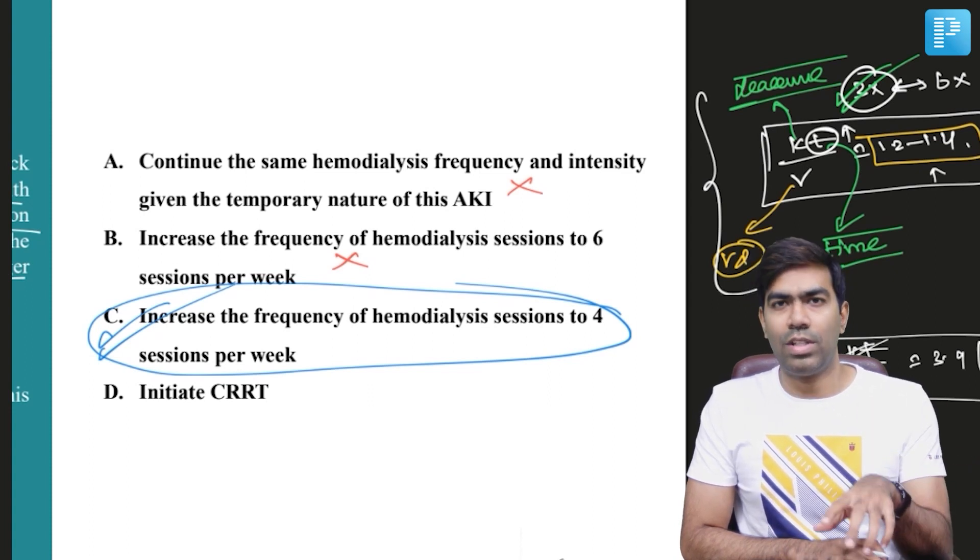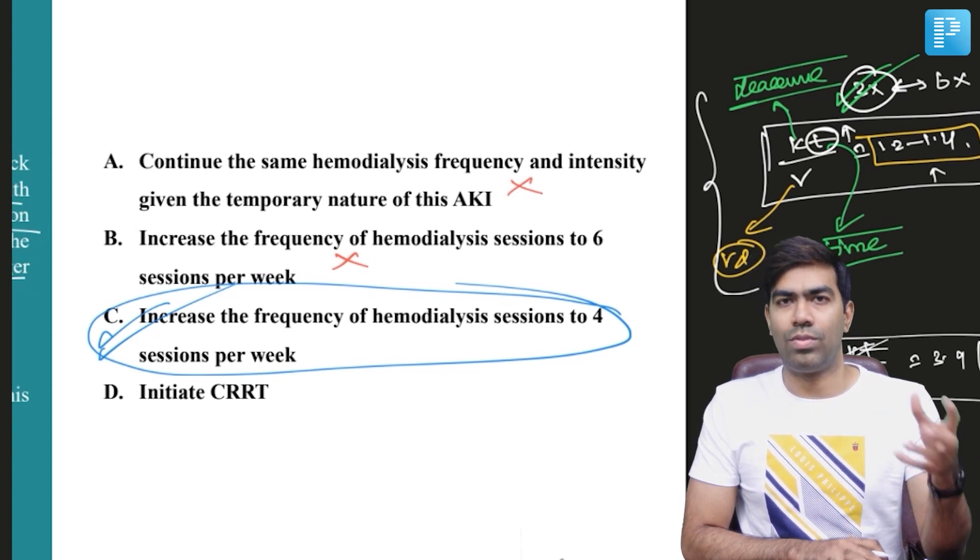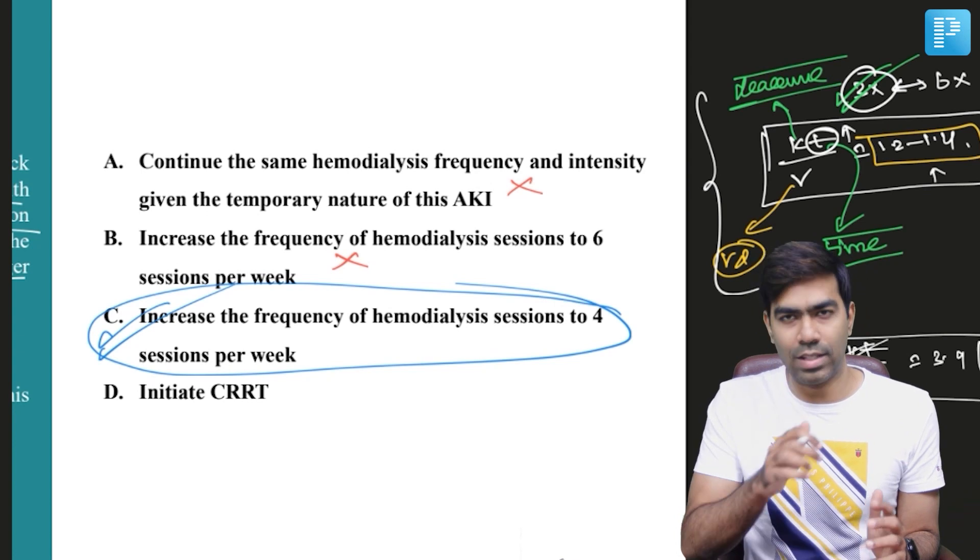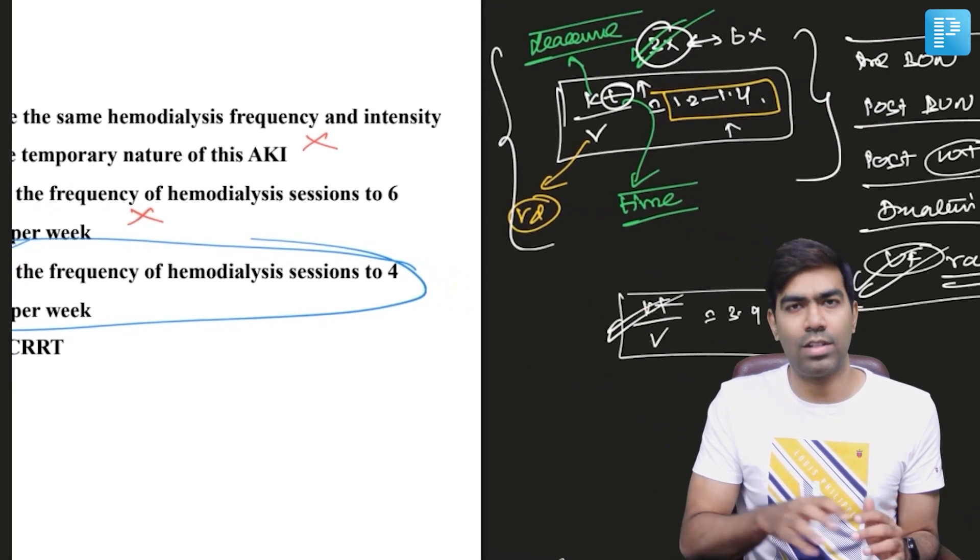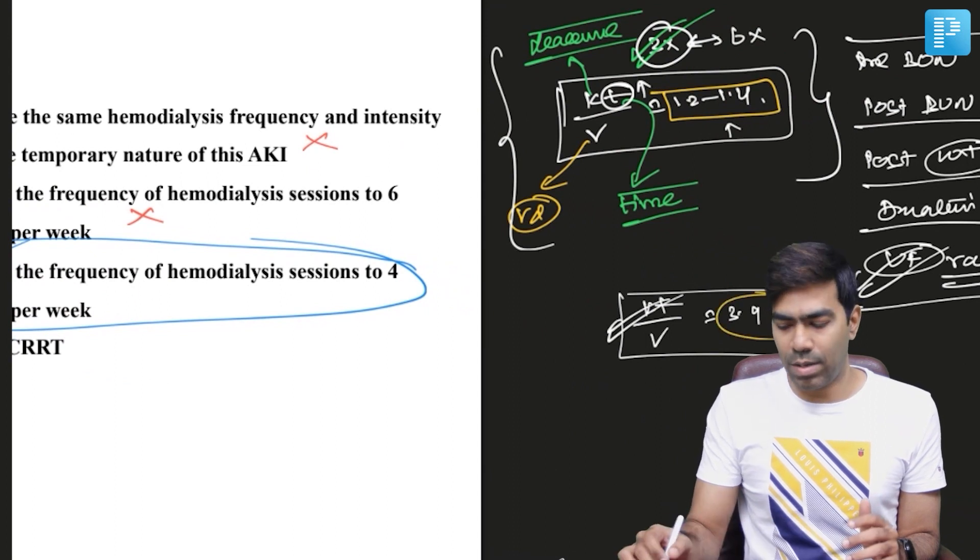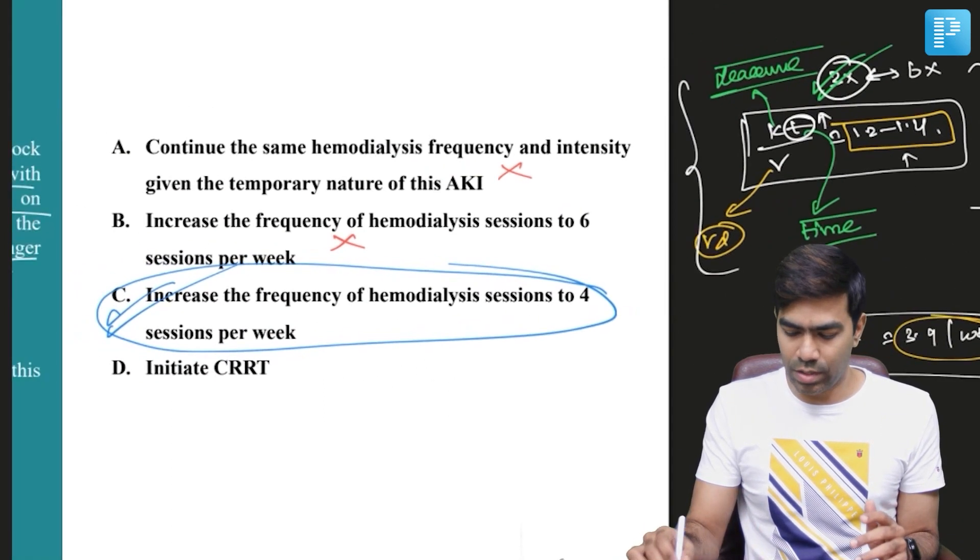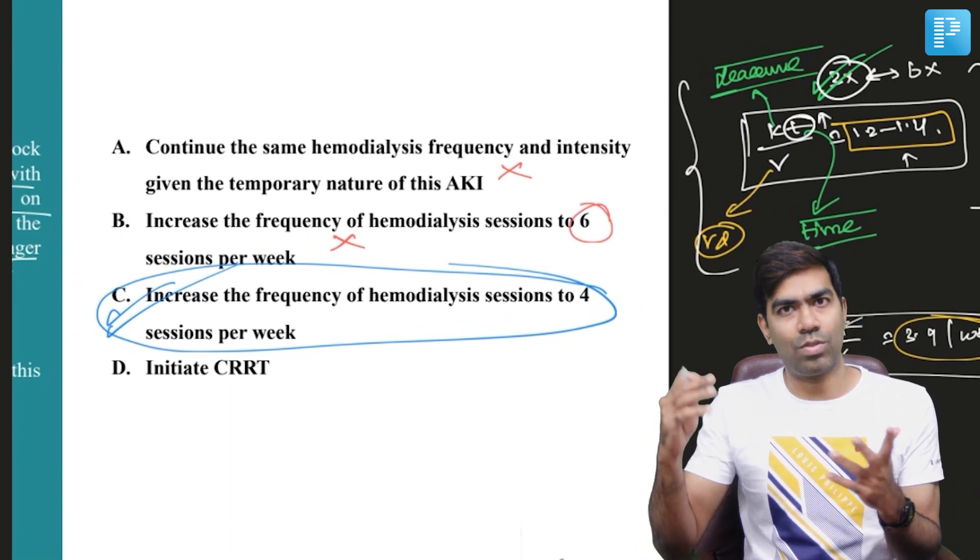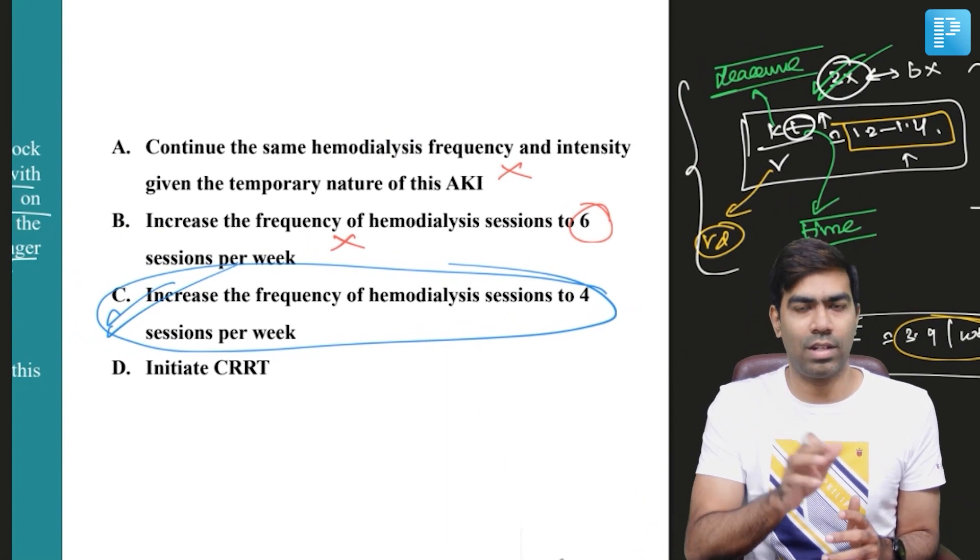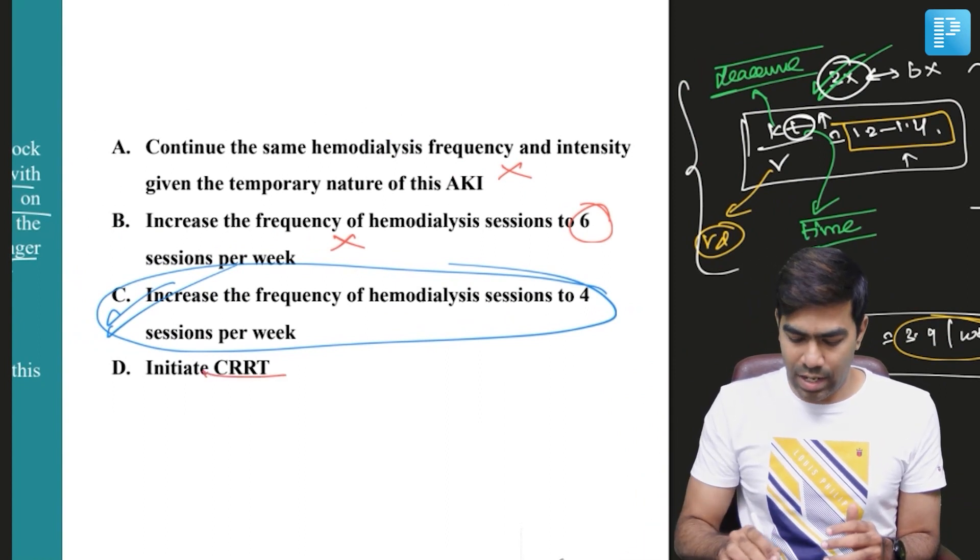Even though this patient will not agree to improving the KT/V per session because you cannot increase the duration of dialysis in this candidate who is not willing, maintaining a KT/V of 3.9 per week is enough. If you do six times dialysis, that will make the KT/V somewhere around six or 6.5, which is also not required. So 3.9 per week is enough.